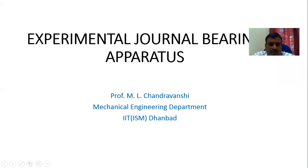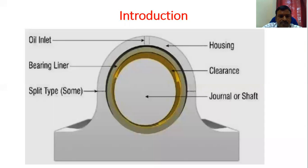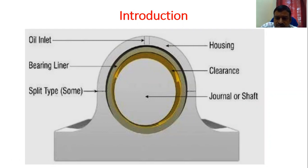Hello everyone, today we are going to see the experiment being conducted on the journal bearing apparatus. Let's first try to understand the different parts of a journal bearing. A journal bearing consists of two major parts: one is the journal or rotatory element, which is generally a shaft, and a stationary part known as a bearing, which is a structural part of the frame.